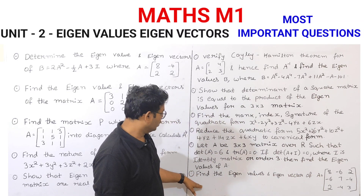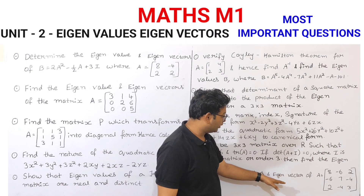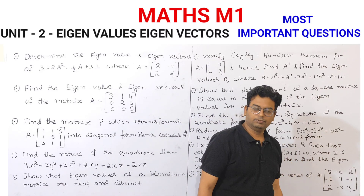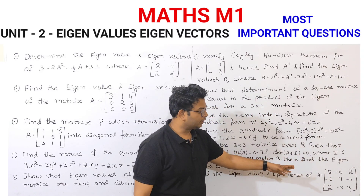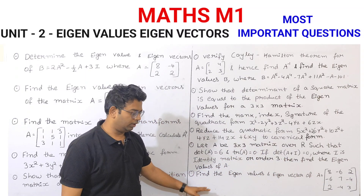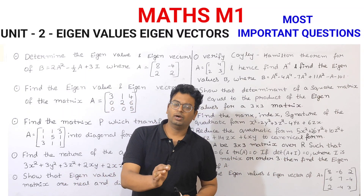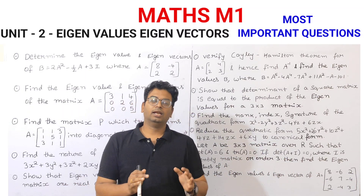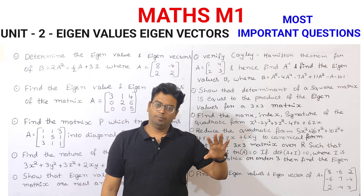Next, find the Eigen Values and Eigen Vectors of A — it is a matrix. It is simple to note that Eigen Values and Eigen Vectors are the main topics of this chapter.